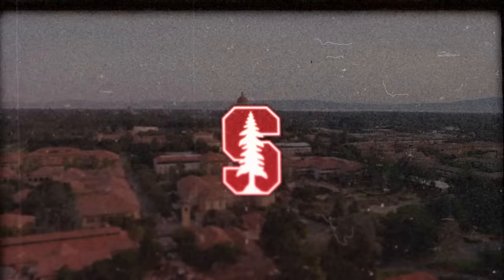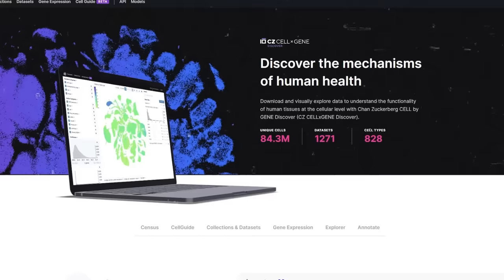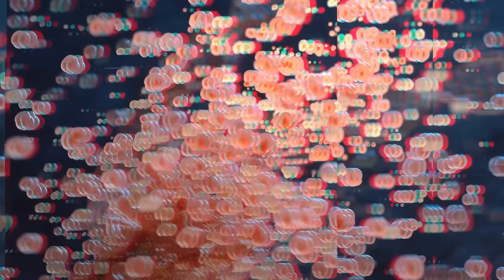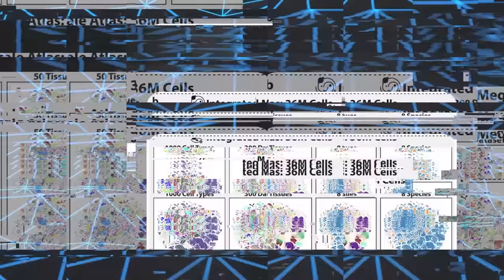The Stanford team later joined the field of foundation models after contributing to the creation of CellXGene, one of the largest cell databases globally. They trained their AI on 33 million cells from this database, focusing on messenger RNA and protein structures, both products of genes. The resulting model, dubbed Universal Cell Embedding, learned to categorize over 1,000 cell types by observing gene activation patterns.